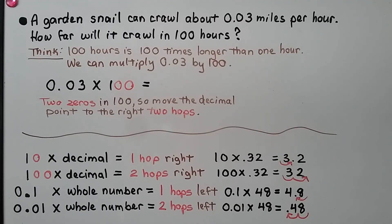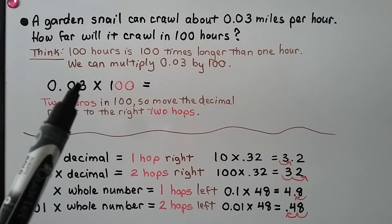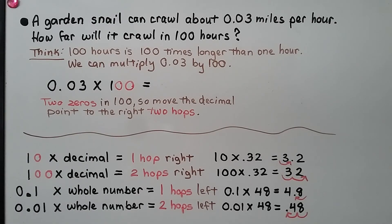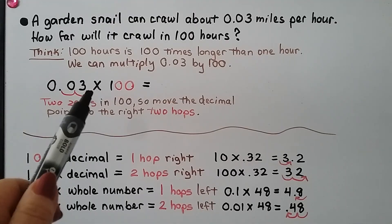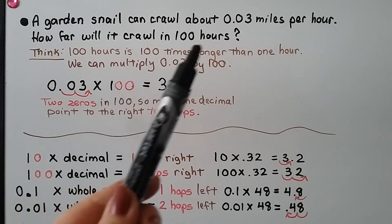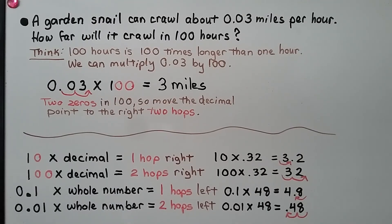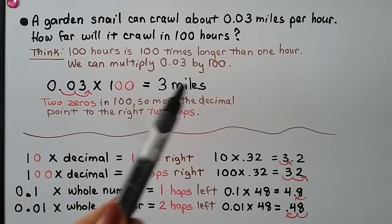A garden snail can crawl about three hundredths miles per hour — that means it's three hundredths of a mile each hour. How far will it crawl in one hundred hours? One hundred hours is one hundred times longer than one hour, so we can multiply three hundredths by one hundred. We have two zeros, and there's a one, so we know our answer is going to involve a three. We move the decimal point two hops to the right — it'll be on the right side of the three. So we have three whole — the answer would be three miles.